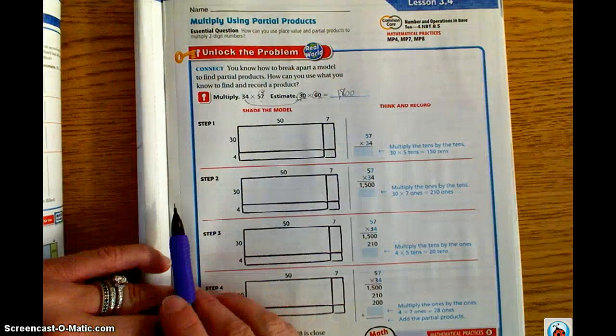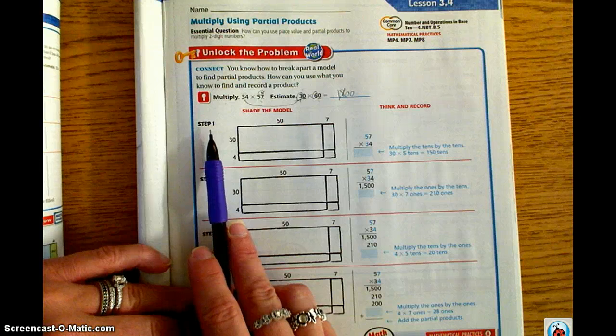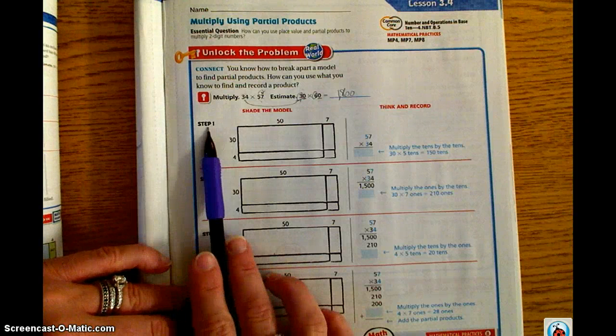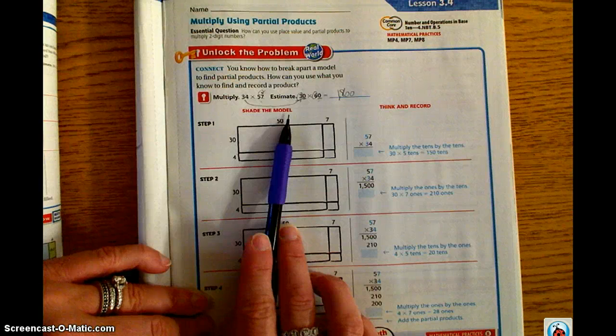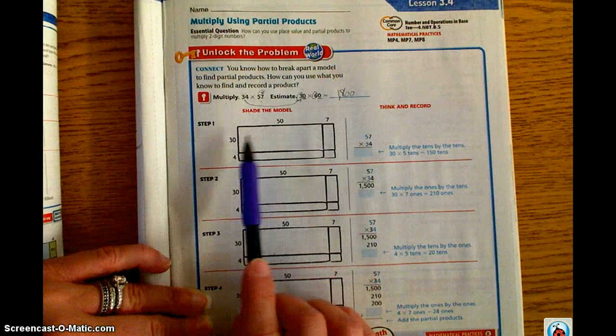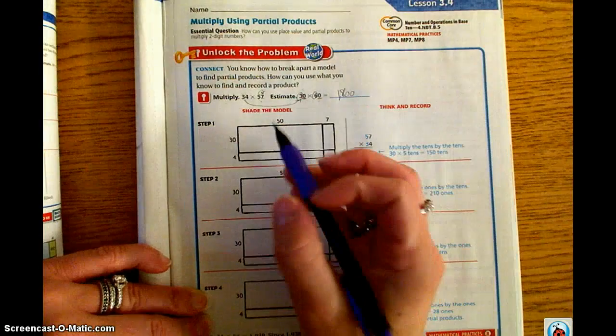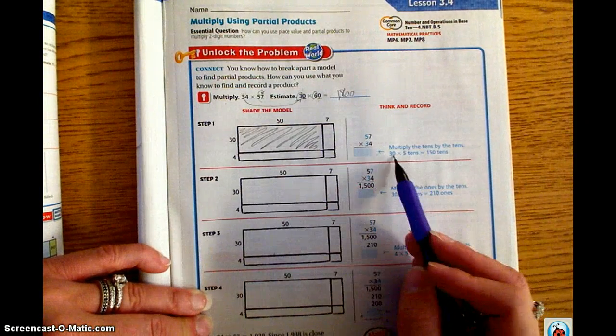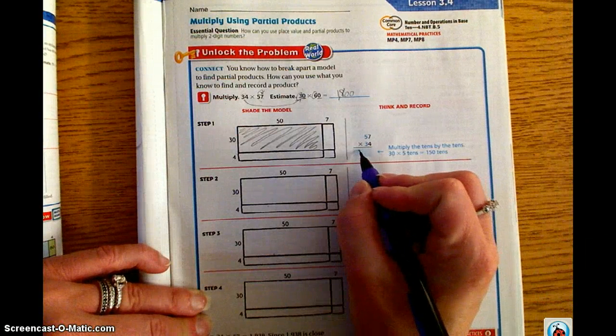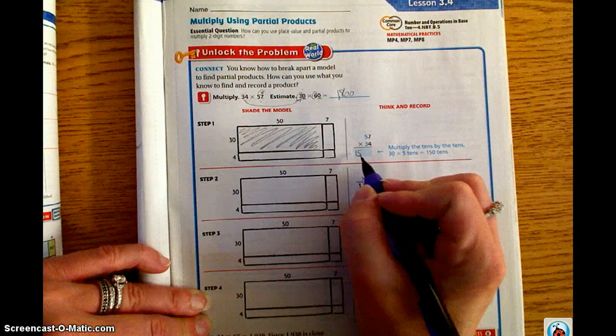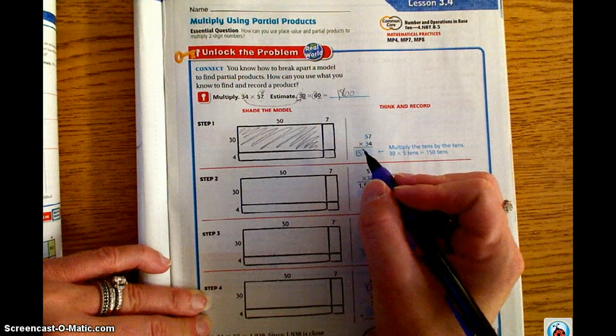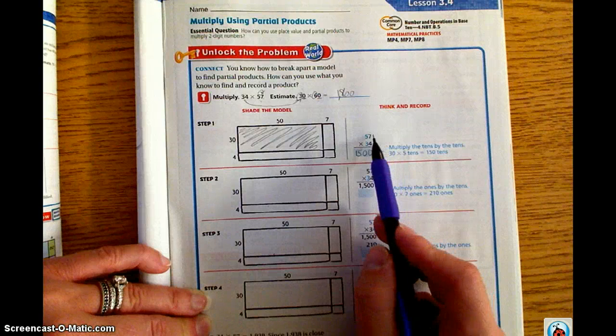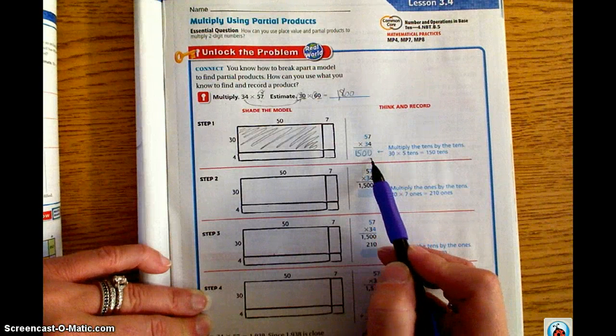Now, if we jump down here to actually solving the problem, we're going to take the partial products method and break it into steps. Step one says to shade the model, and we are representing the 5 times 3. So we're going to shade this large box here. And we know that the 30 times 5 is 150 tens. So we have 150 tens. And then we have to fill in the zero for our ones place.